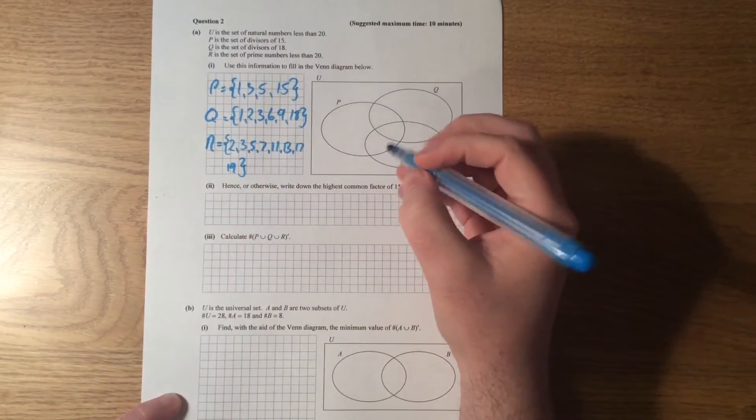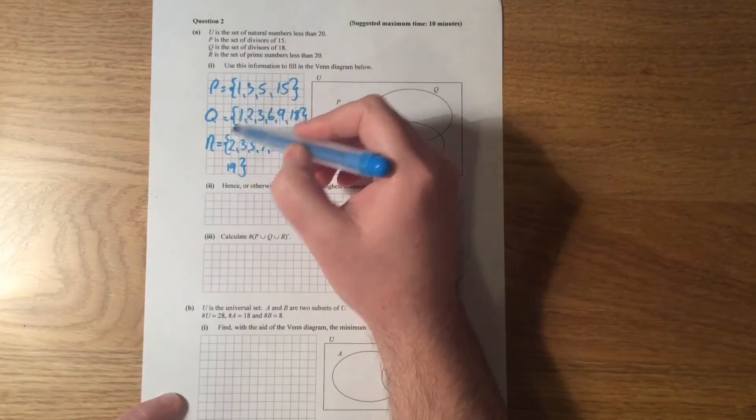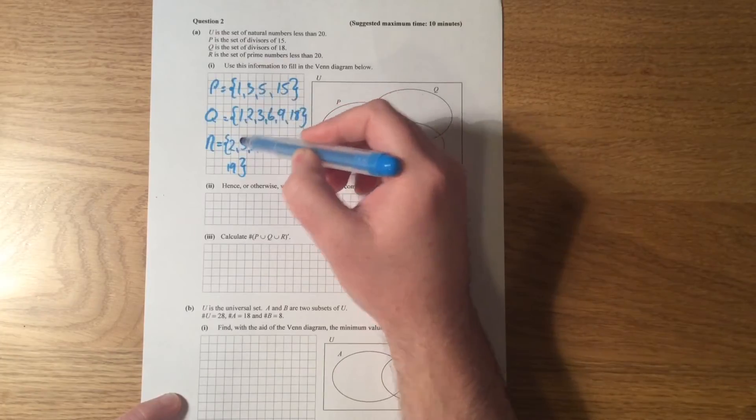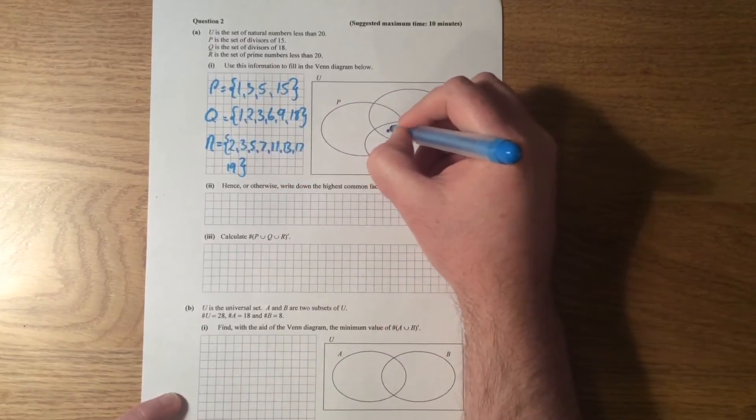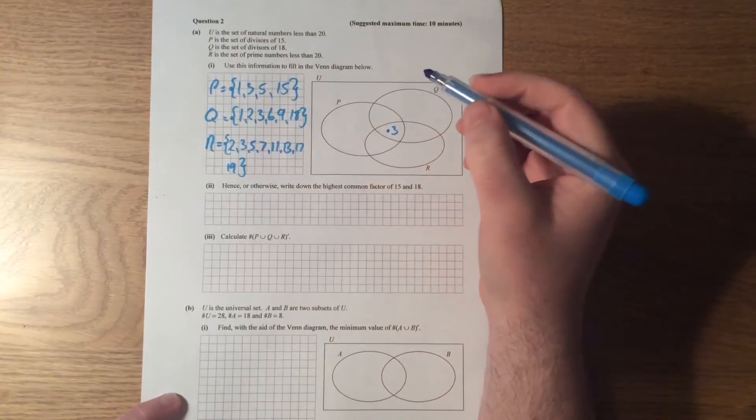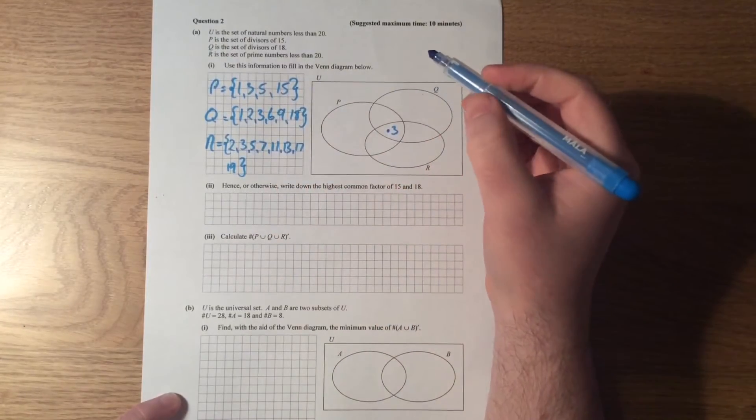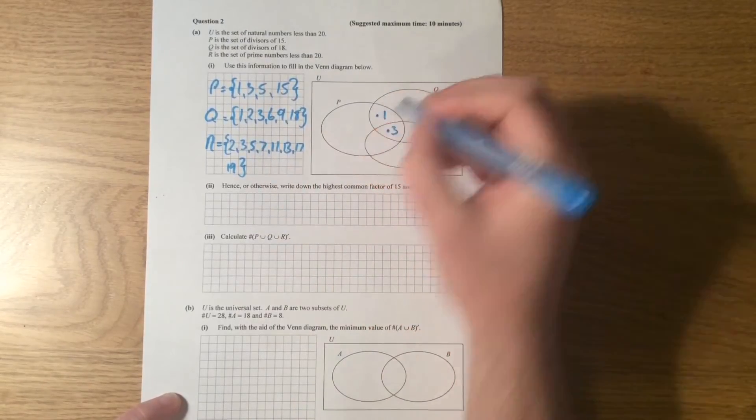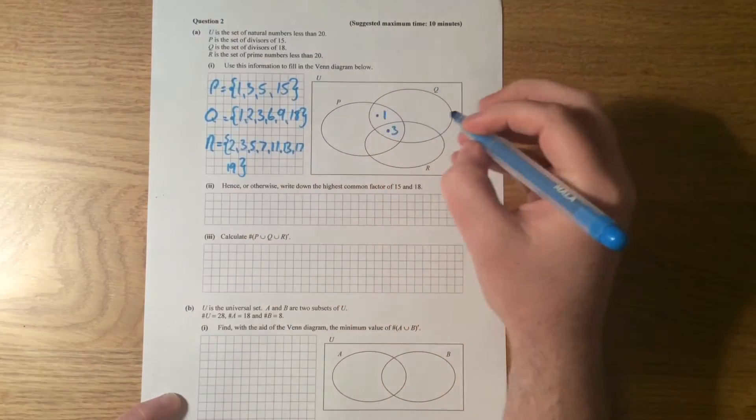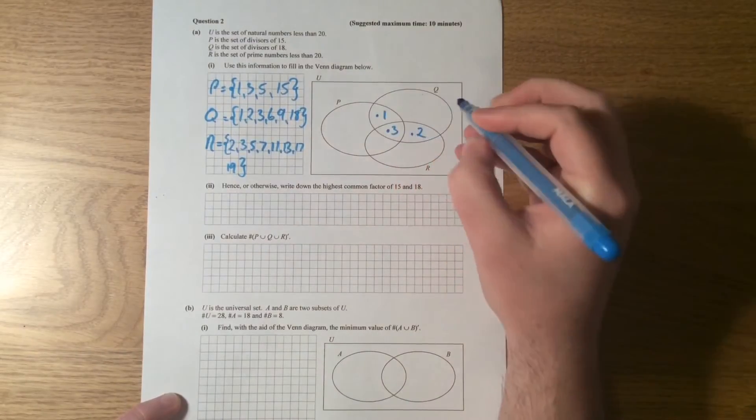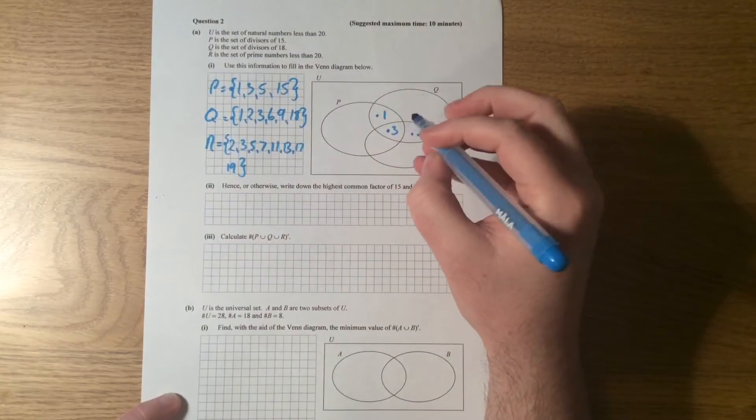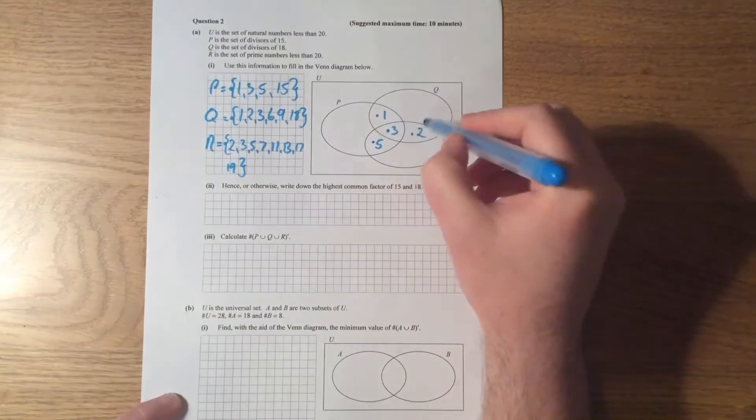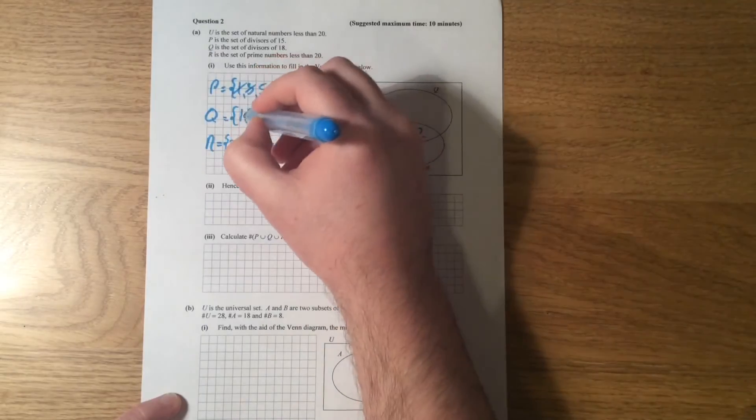So let's have a look. Let's start with P. Let's have a look for things that are shared. Well, 2 is shared in these two but it's not shared in all three. Well, 3—1, 2, 3—three is an element of all of them, isn't it? It's in P, Q, and R. Let's see what else. Is there anything else that's shared? There isn't. 1 is shared between P and Q, which goes there. 2 is shared between Q and R, which goes there. And 5 is shared between P and R, which goes there.